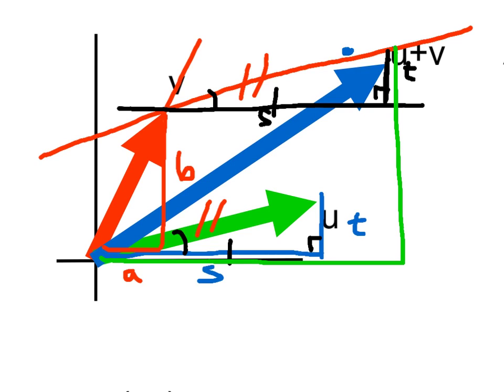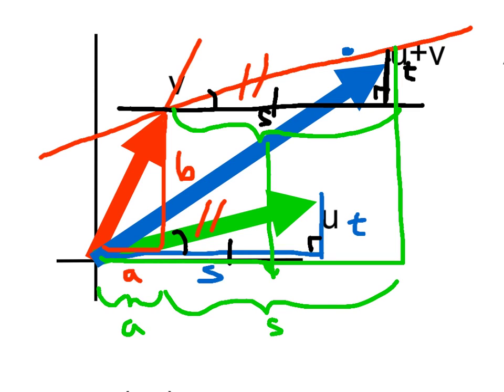Well, here I have a, and then along here I have s. So that means that the rest of this is s, which means that the x-coordinate of u plus v is a plus s. And similarly here we have that this is b, and this is t, so we have that that is t plus b.